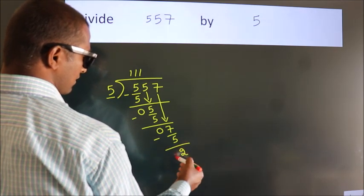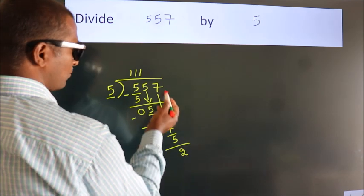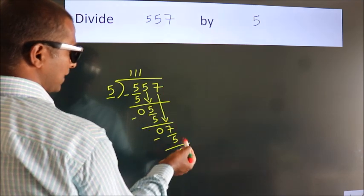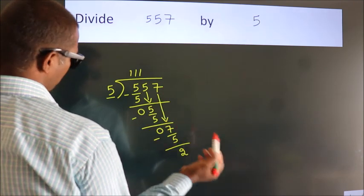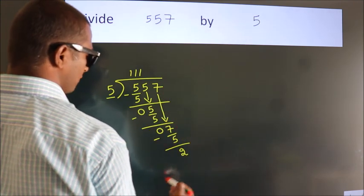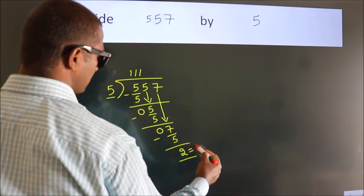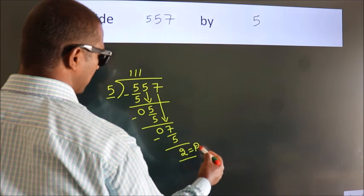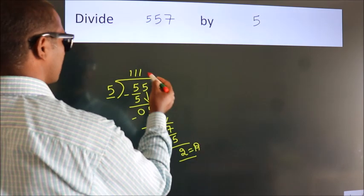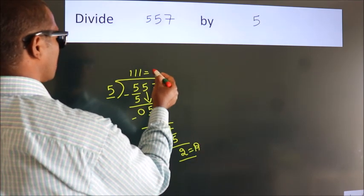After this, there are no more numbers to bring down, so we stop here. This is our remainder, and this is our quotient.